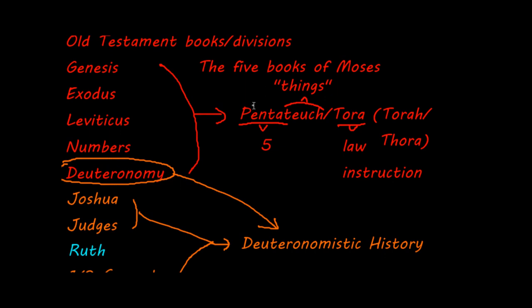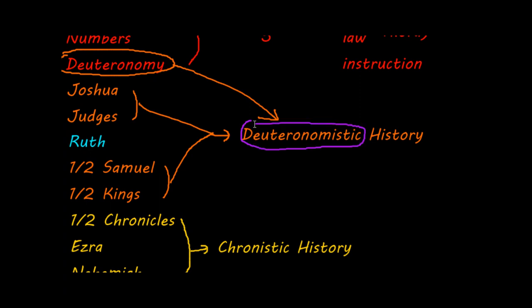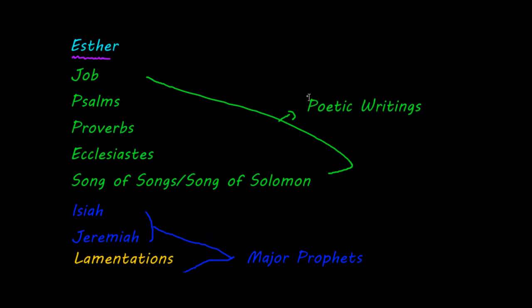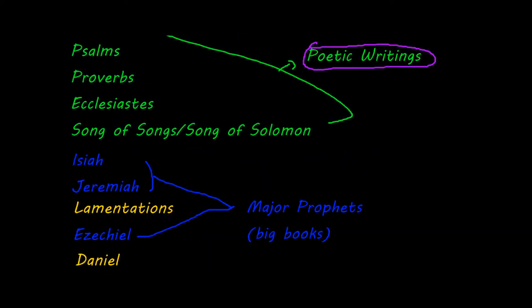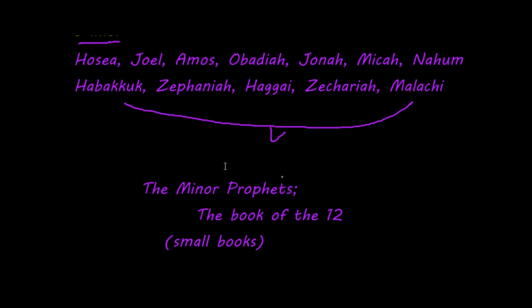So there you have it: first the five books of Moses, or the Pentateuch; next the Deuteronomistic History with the book of Ruth as an odd one out; then the Chronistic History; the book of Esther, which doesn't really belong anywhere else; the Poetic Writings; the Major Prophets with Lamentations and Daniel as odd ones out; and finally the Minor Prophets. And that's the end of this video — see you in the next one.